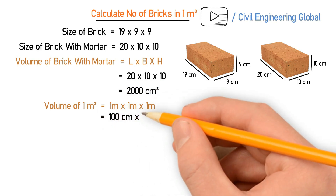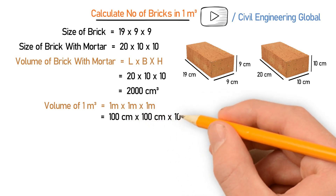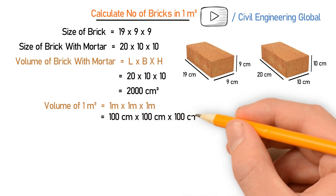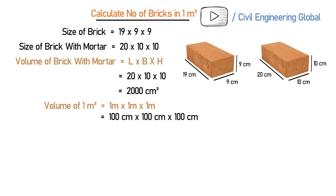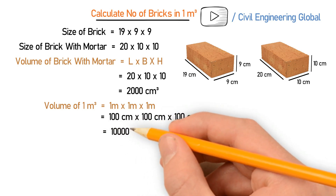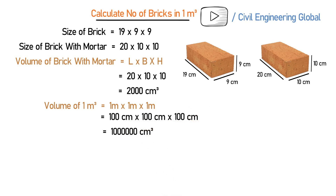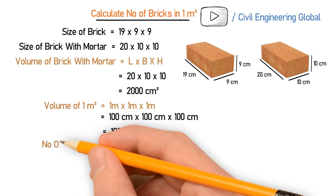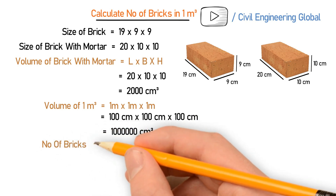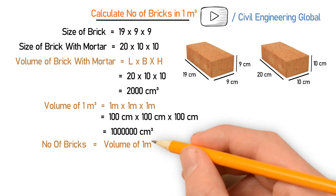Now let's calculate the volume of 1 meter cube, which is 1 × 1 × 1 meter. Converting meters into centimeters: 1 meter is equal to 100 centimeters. After calculating, you will get 1 million centimeter cube. So this is the volume of 1 meter cube.